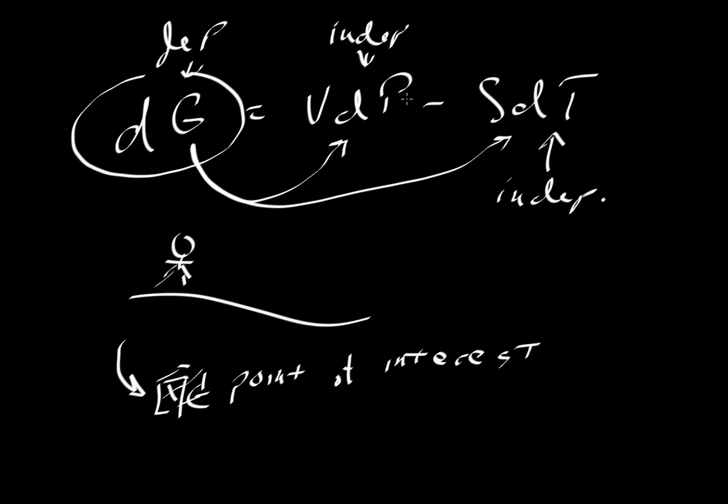We could do experiments where we fix the pressure and fix the temperature, and so we can look at how that might affect dG as we do experiments at different pressures and temperatures. Or as we look at natural systems in the Earth, whether it's on the surface or deep in the Earth, or even in the atmosphere, we could think about changes in temperature and pressure and how those affect the energy of the system.